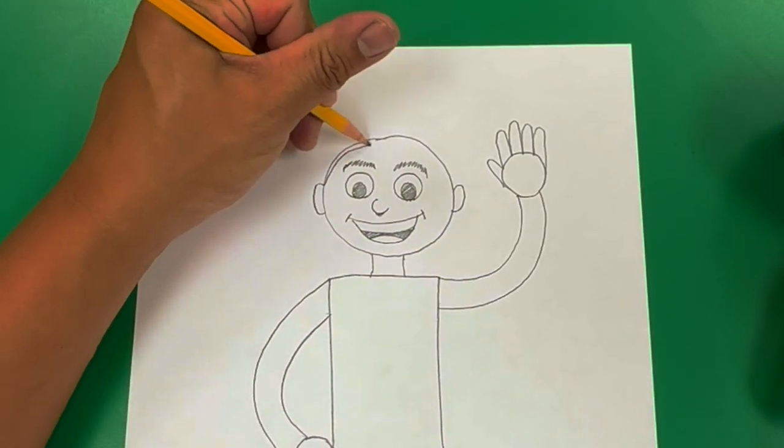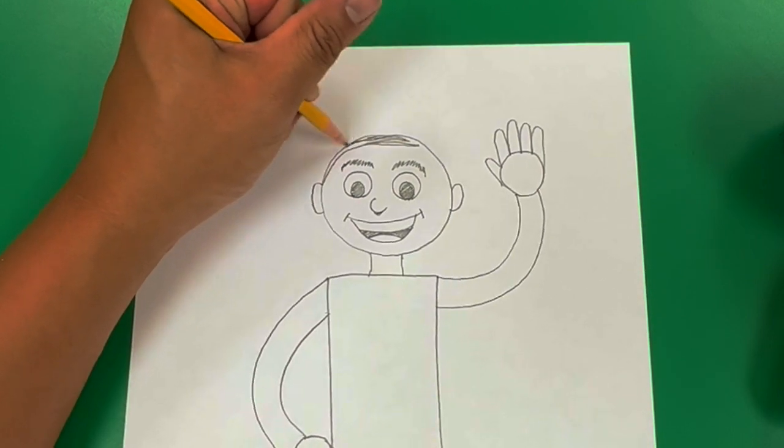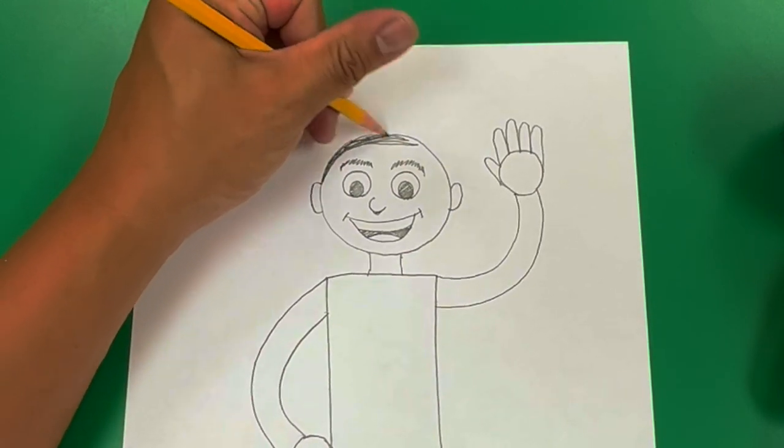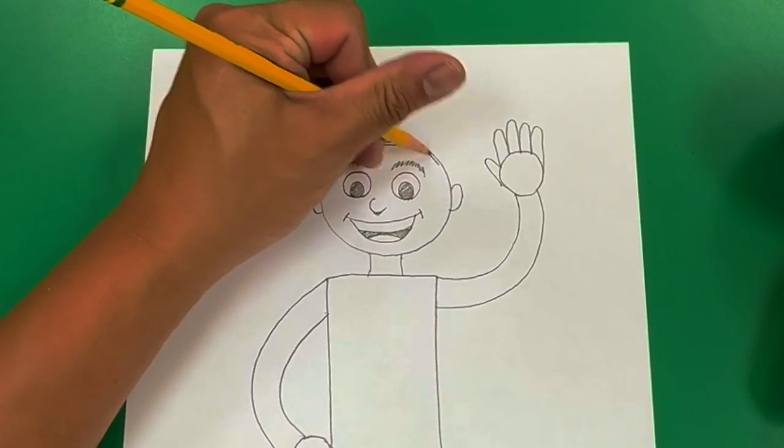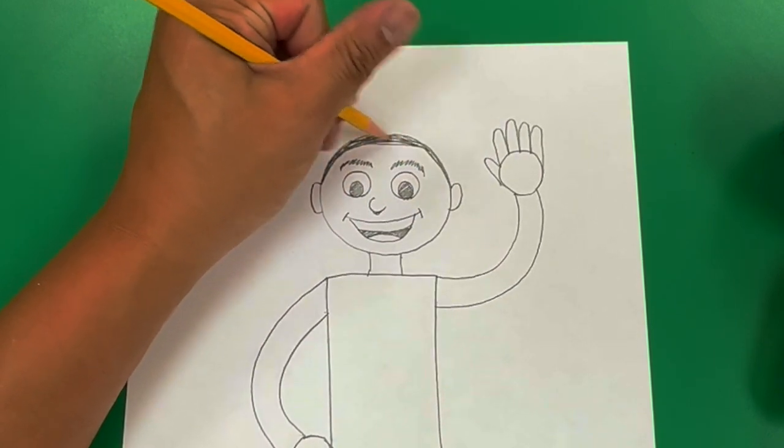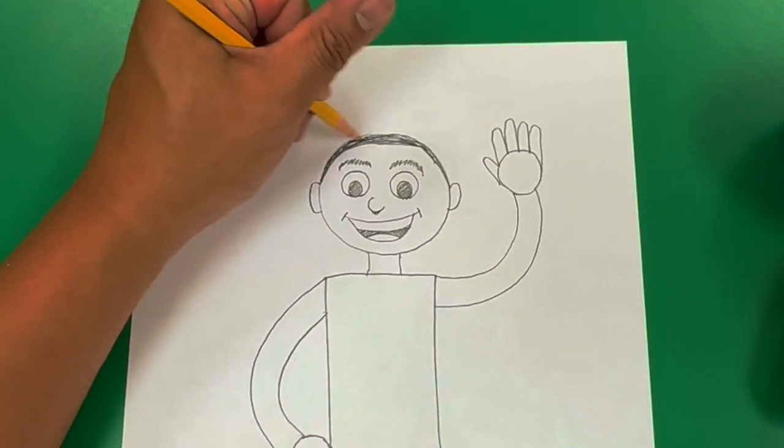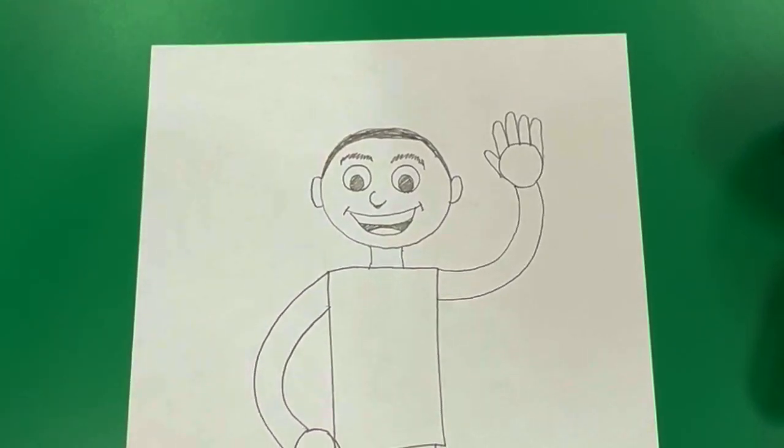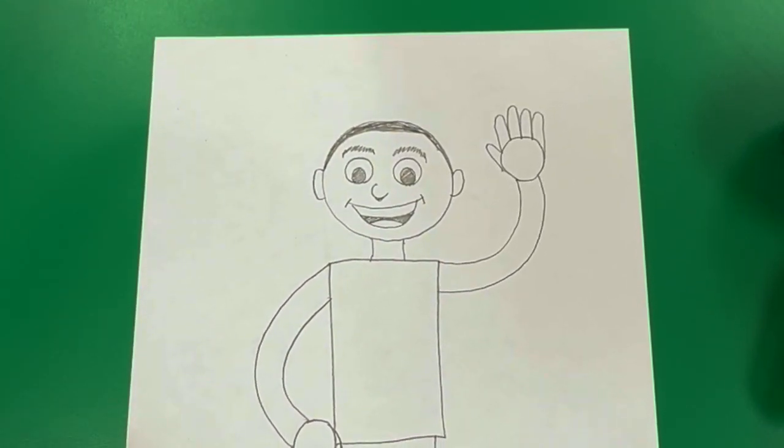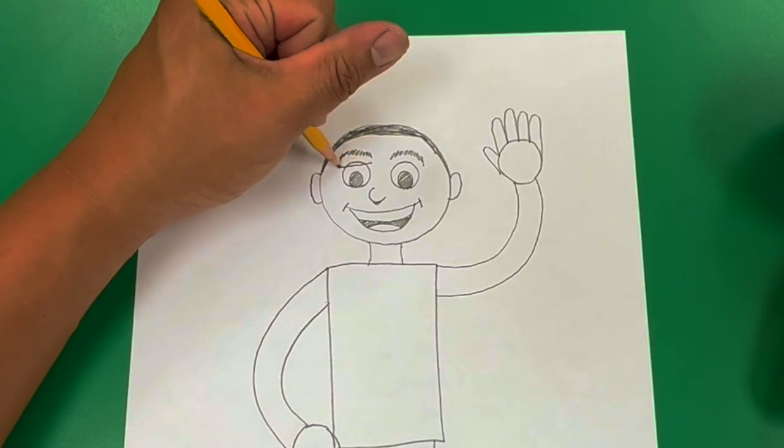Everyone has different hairstyles. For me, it's pretty easy. My hair is very short. So I'm just going to fill in a short little shape from ear to ear. Take a moment and think about how you're going to draw your hairstyle. Because everyone's hairstyle is different.